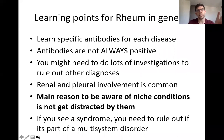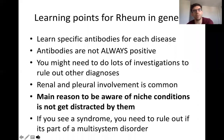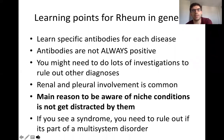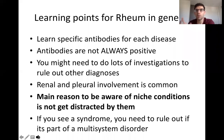Some general learning points for today: learning antibodies for each disease is something quite easy to do by flashcards. Antibodies are not always positive, but a lot of the time they are. In rheumatology, you often need to rule out lots of other diagnoses, especially because it's a multi-system disorder — renal and pleural involvement are quite common. The main reason for this lecture is to make you aware of niche conditions that can come up in an SBA so you don't get distracted by them as distractors.